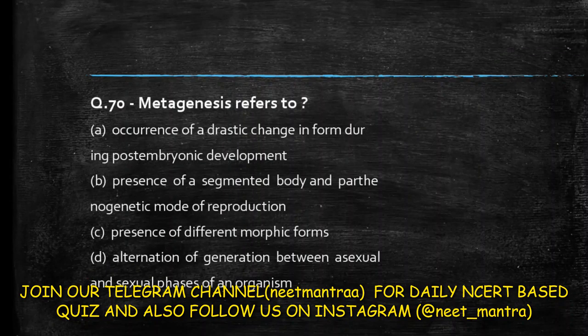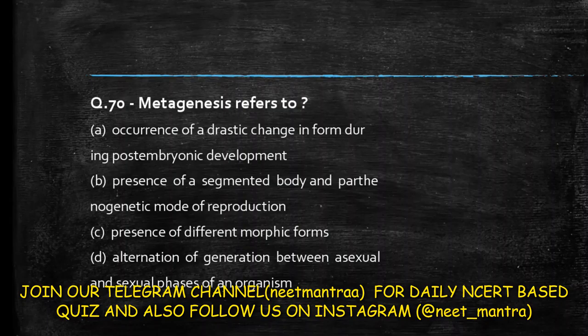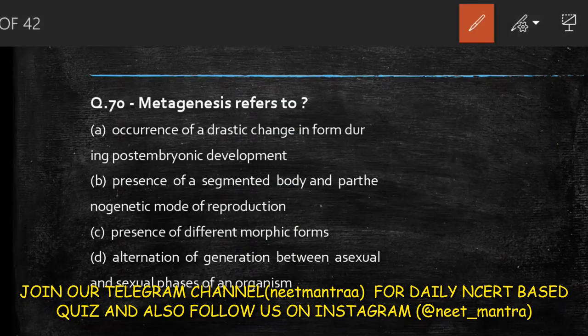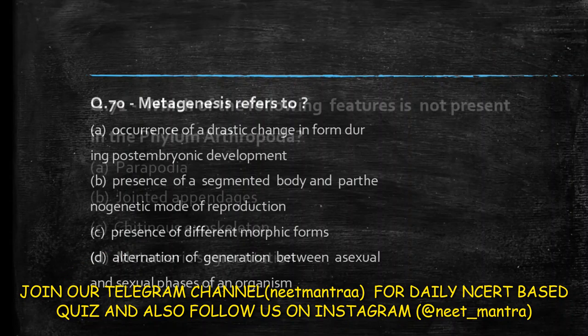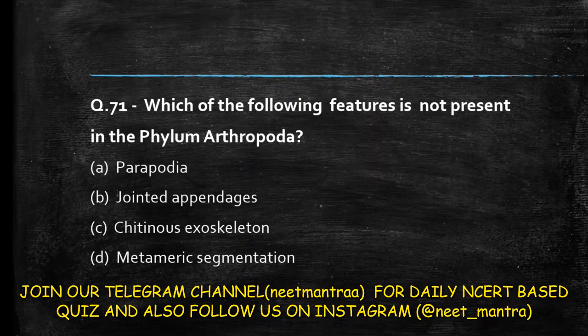Next question: metagenesis refers to — occurrence of drastic changes in form during post-embryonic development; presence of a segmented body and parthenogenetic mode of reproduction; presence of different morphic forms; alteration of generations between asexual and sexual phases of an organism. Metagenesis is found in coelenterates, where alternation of generation between polyp and medusa occurs, as seen in Obelia. So the answer is option D.